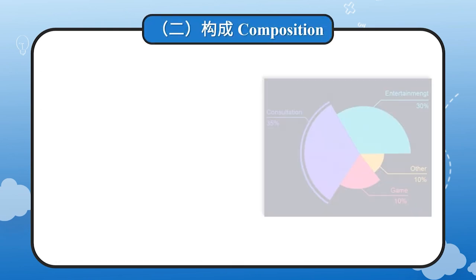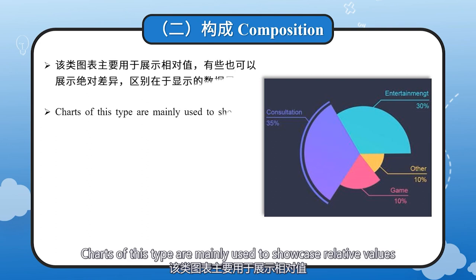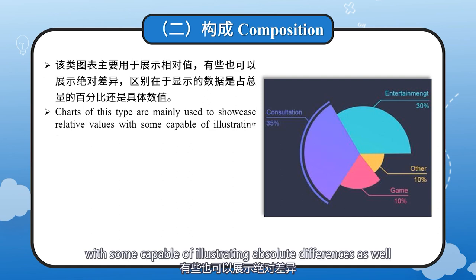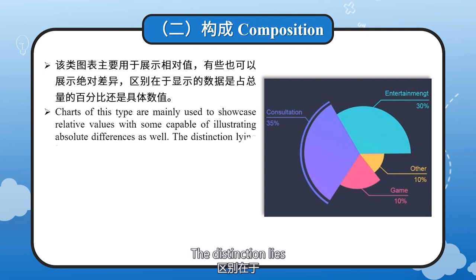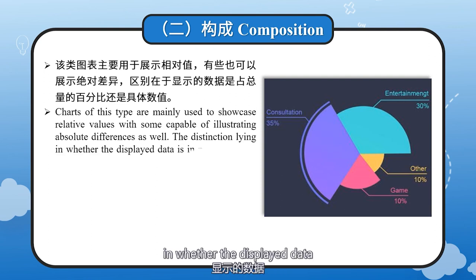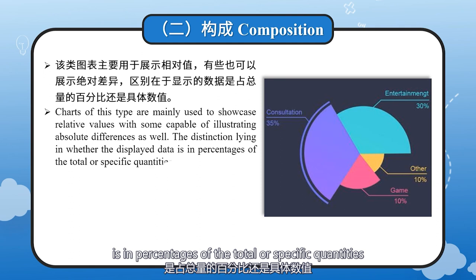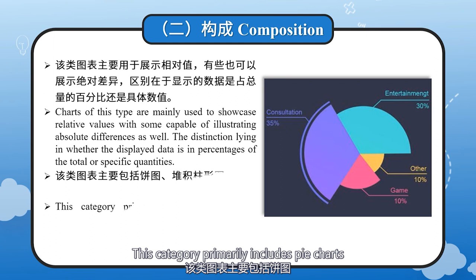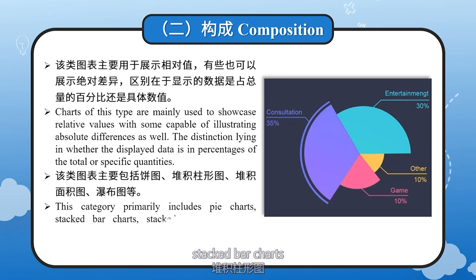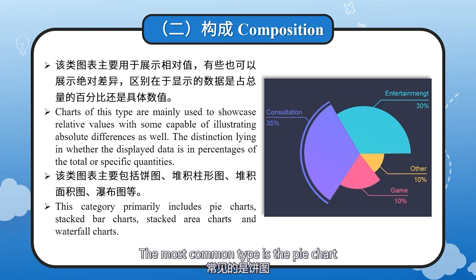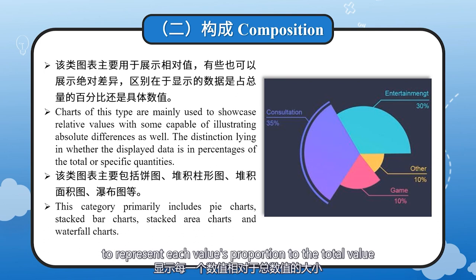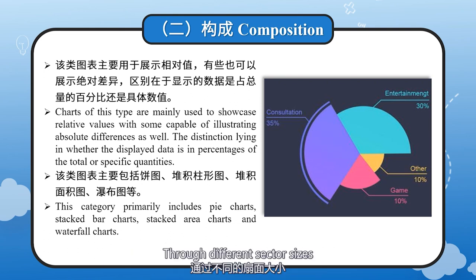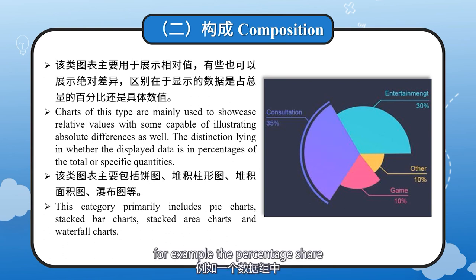Composition: Charts of this type are mainly used to showcase relative values, with some capable of illustrating absolute differences as well. The distinction lies in whether the displayed data is in percentages of the total or specific quantities. This category primarily includes pie charts, stacked bar charts, stacked area charts, and waterfall charts. The most common type is the pie chart. It uses sectors to represent which values proportion to the total value. Through different sector sizes, it displays the proportion of different categories — for example, the percentage share of various data items in a data group to the sum of all data.